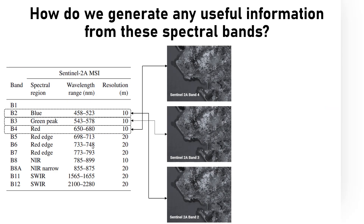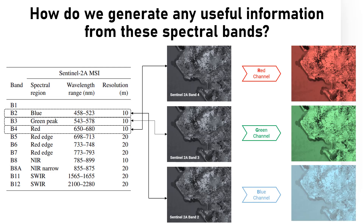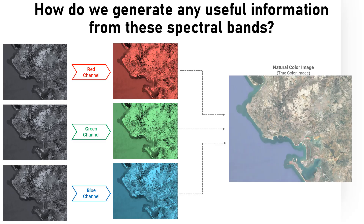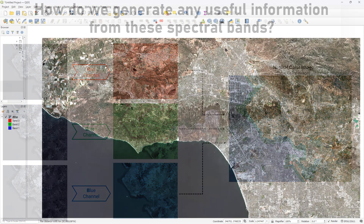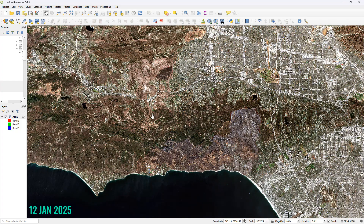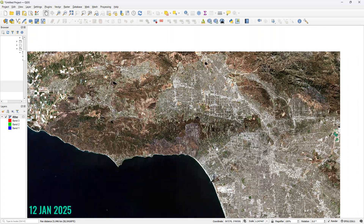Now, if I take the red, green, and blue band data files from Sentinel and simply plug them into the red, green, and blue channels in a GIS software like QGIS, I would be able to generate a natural color image corresponding to this particular date — which is nothing but how we are used to seeing satellite images more commonly through things like aerial shots, drone images, and that sort of thing.